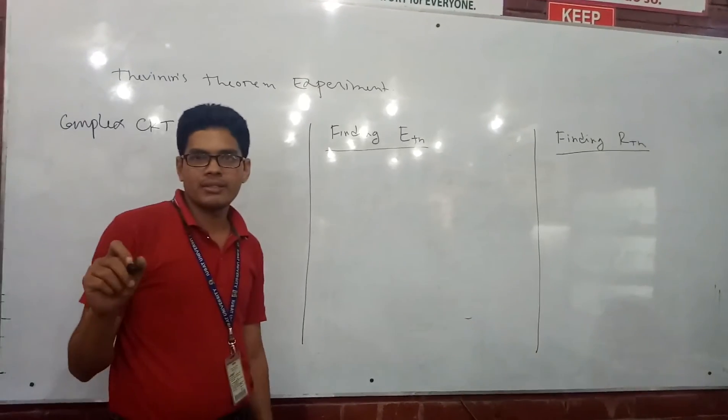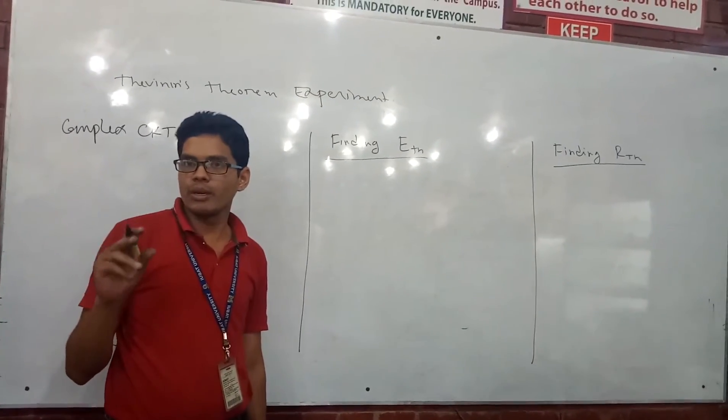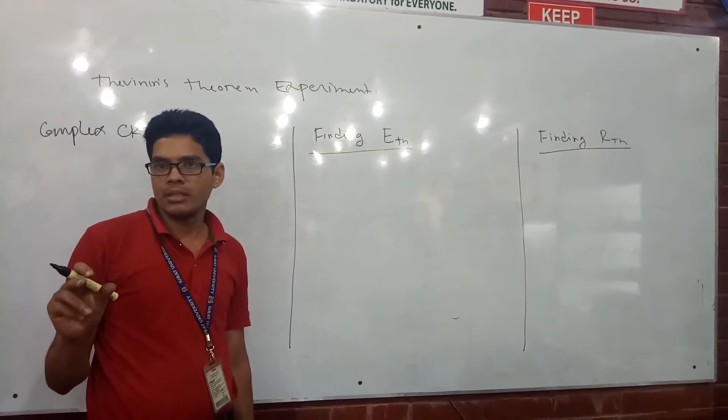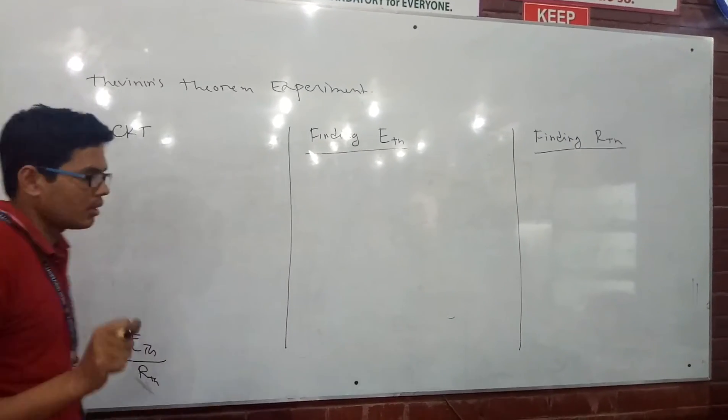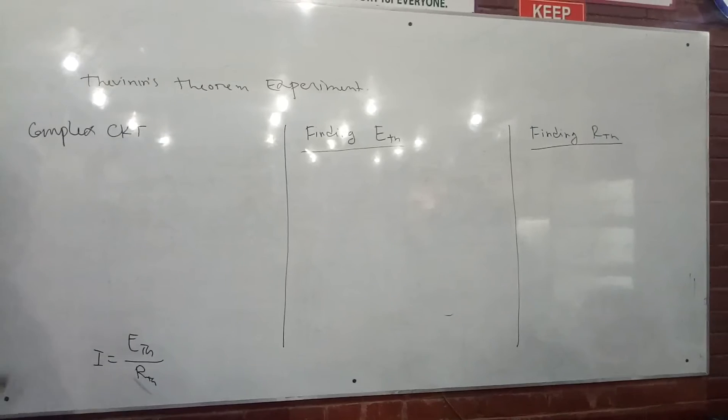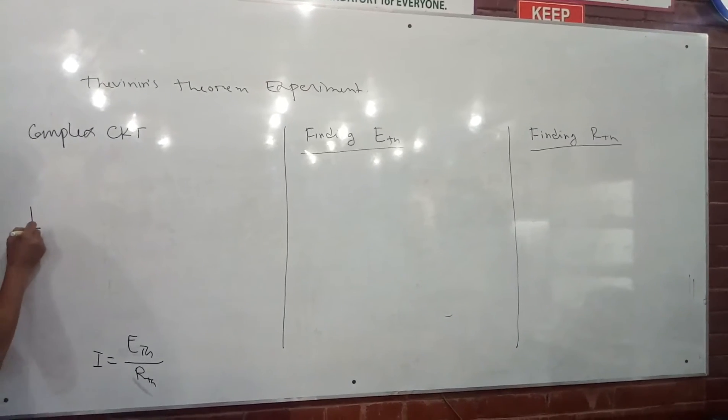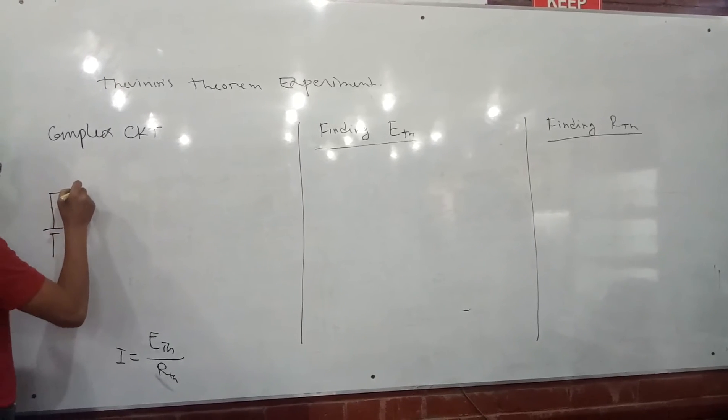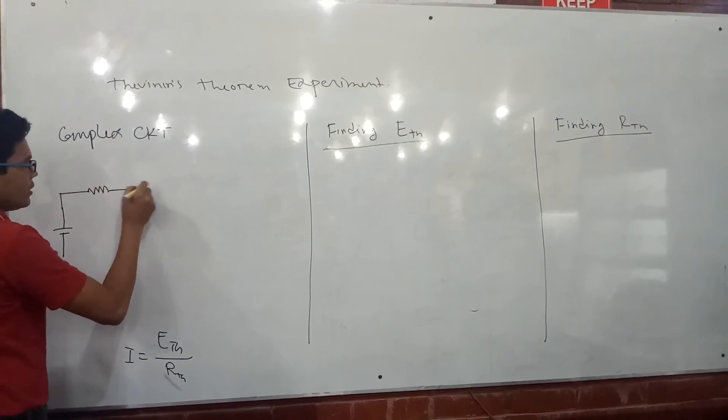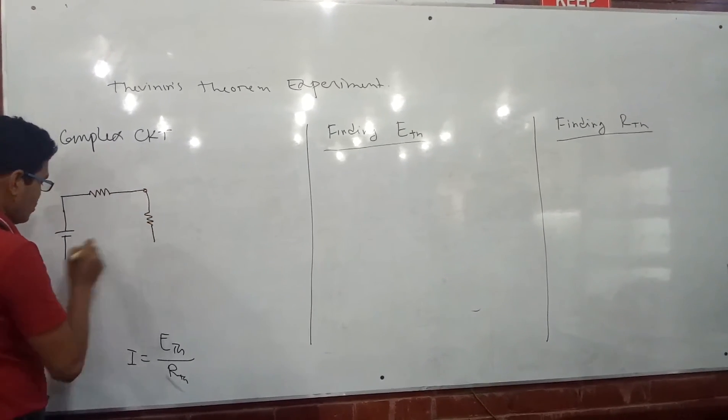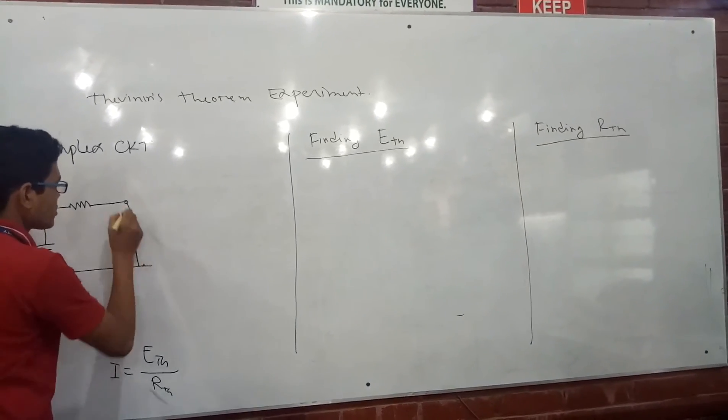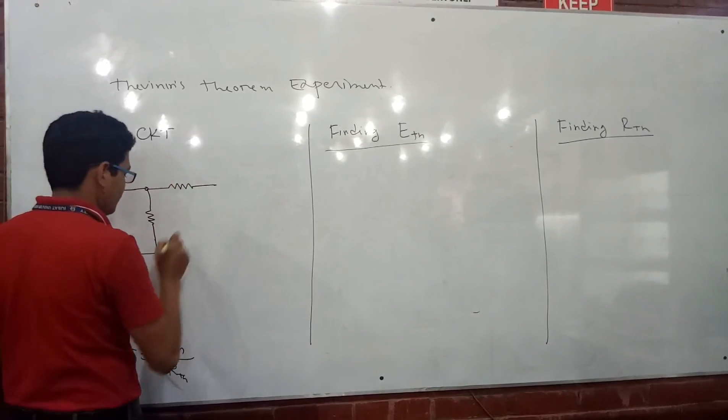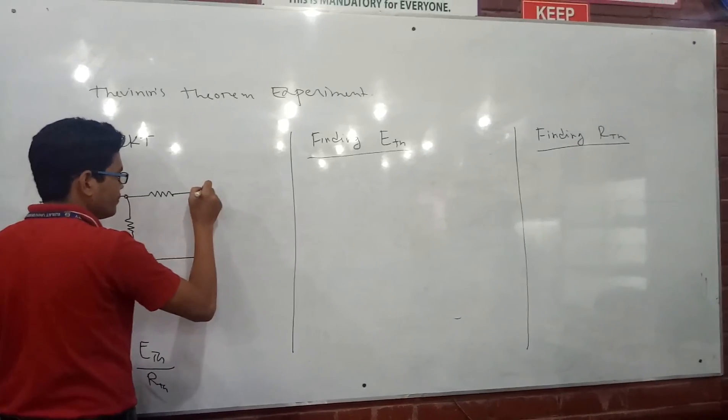Let's take a circuit where there are two sources and a resistor, and then there were two other resistors in parallel branches.